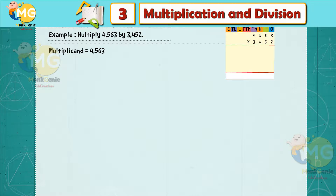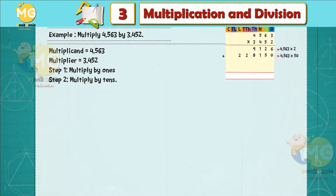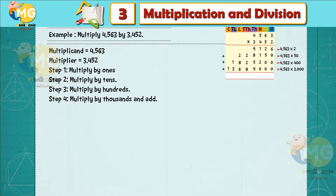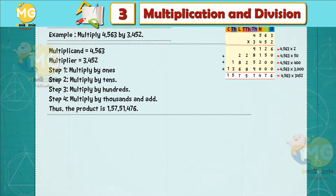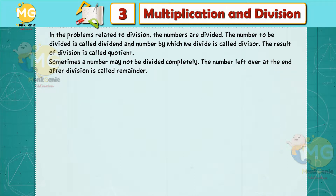Multiplication by 4-digit numbers. Example: multiply 4,563 by 3,452. Multiplicand = 4,563, multiplier = 3,452. Step 1: multiply by 1s. Step 2: multiply by 10s. Step 3: multiply by hundreds. Step 4: multiply by thousands and add. The product is 1 crore 57,51,476.